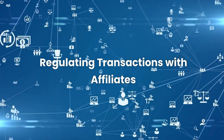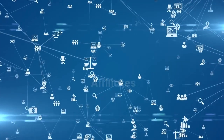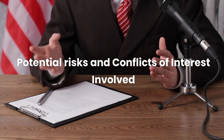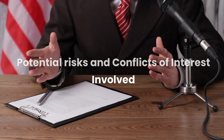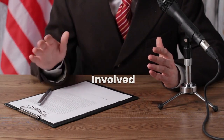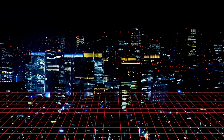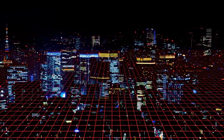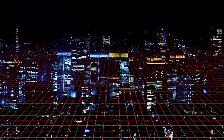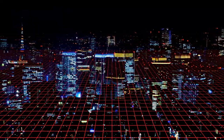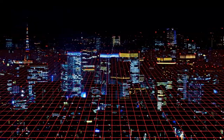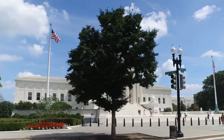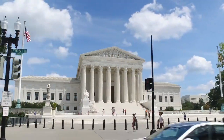The rationale behind regulating transactions with affiliates lies in the potential risks and conflicts of interest involved. When dealing with affiliates, there is a heightened possibility of self-dealing, insider abuses, and excessive risk-taking. Regulation W provides a framework to address these risks and promote transparency, accountability, and prudence.